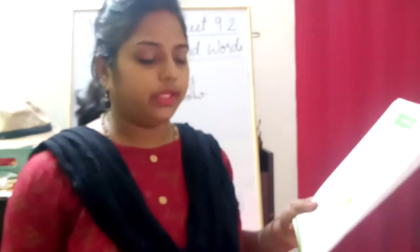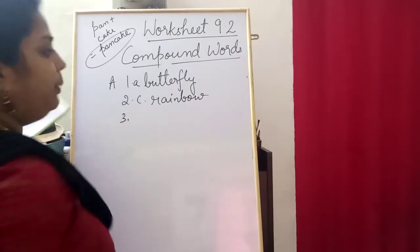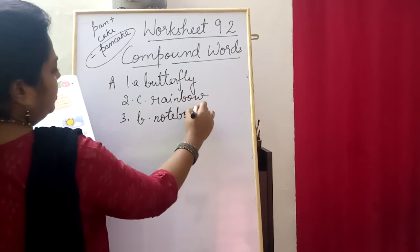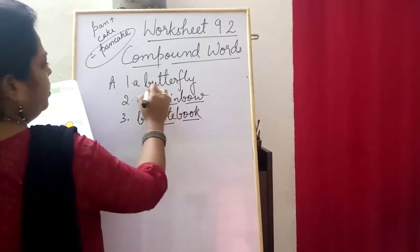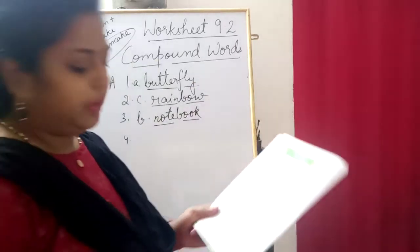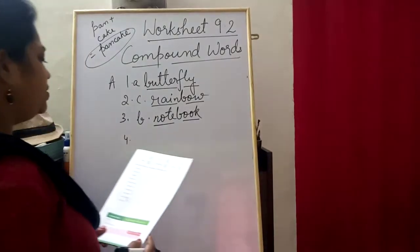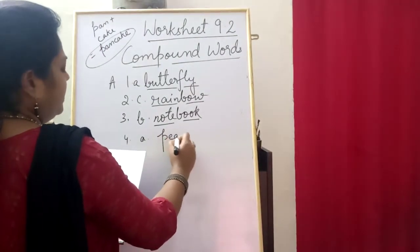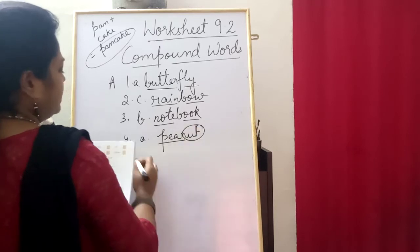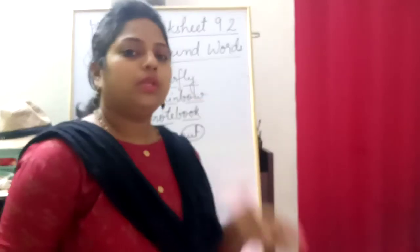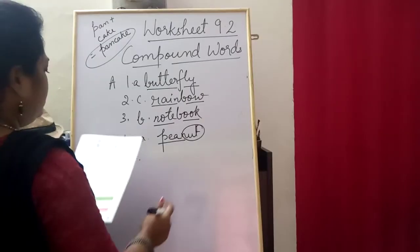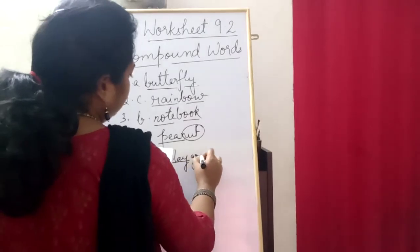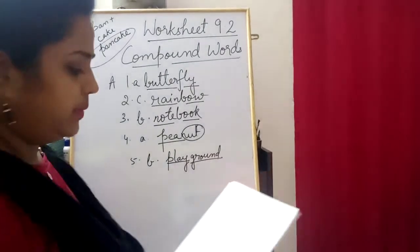The fourth set has notebook — note and book — butter plus fly, so these are compound words. Next set: peanut, brinjal, oil — what do you think should be the answer? Yes, your guess is correct, it is peanut because it is made by pea and nut. You don't have to circle or underline like this — I have just underlined and circled to make it clear. Fifth set: basket, playground, kitchen — so here we have playground, because it is play and ground — two meaningful words making a new word.